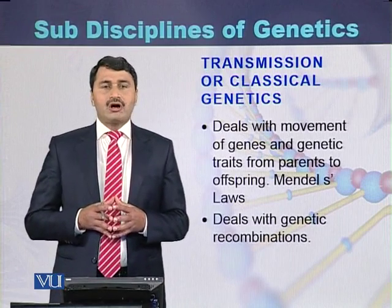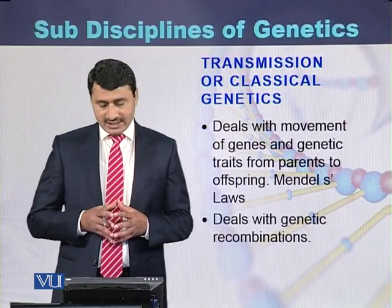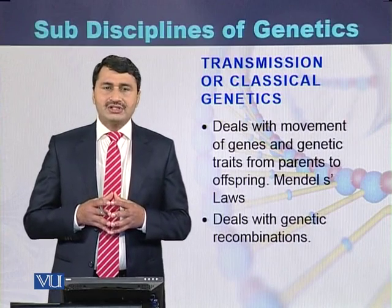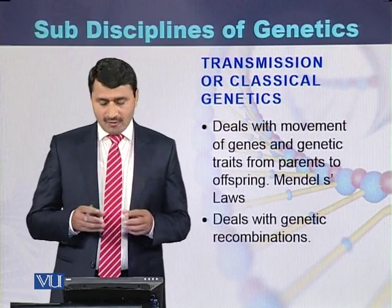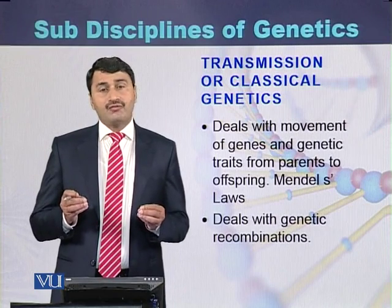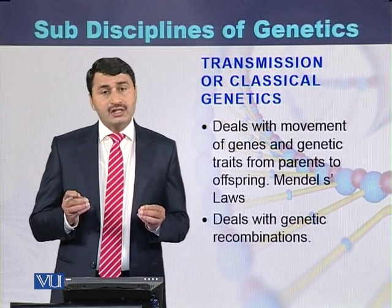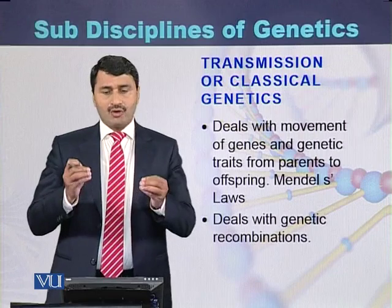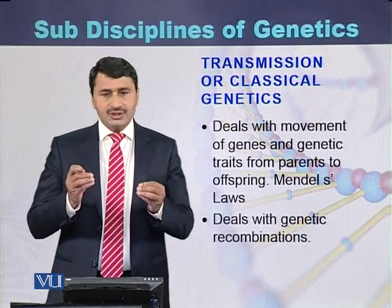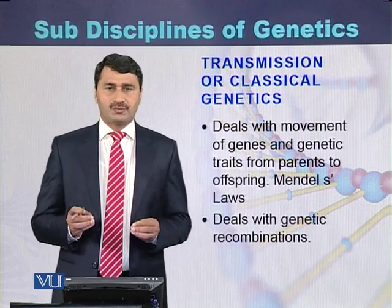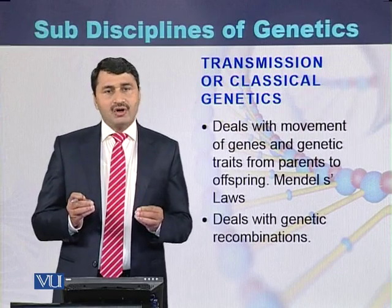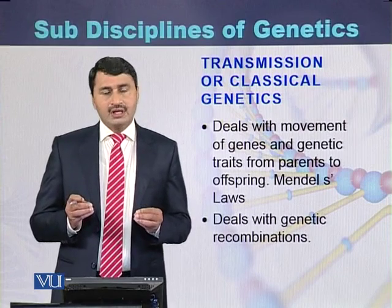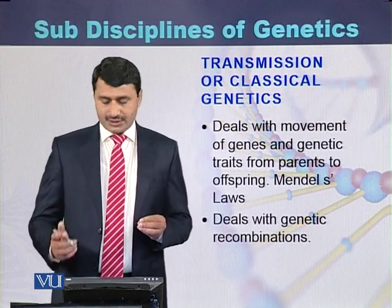Historically, transmission or classical genetics was developed first. Transmission or classical genetics deals with the movement of genes, chromosomes, or traits from parents into offspring. This type of genetics also deals with genetic recombinations.